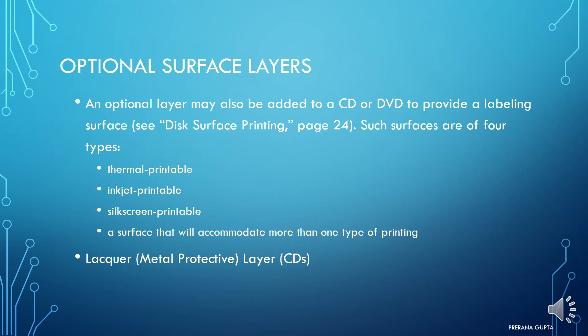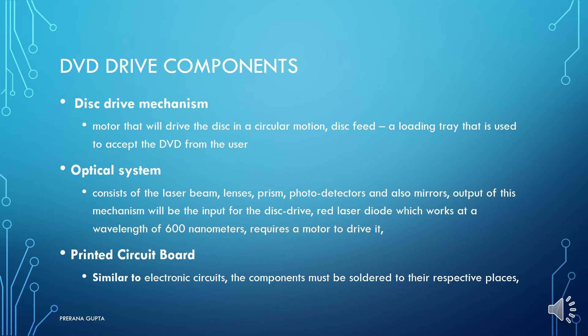Optional surface layers may also be added to a CD or DVD to provide a labeling surface for disc surface printing. Such surfaces are of four types: thermal printable, inkjet printable, screen printable, and a surface that accommodates more than one type of printing. A lateral material protective layer is another extra material mainly found in CD only.